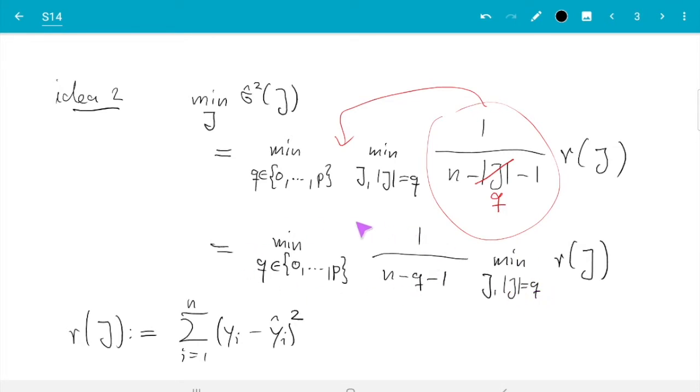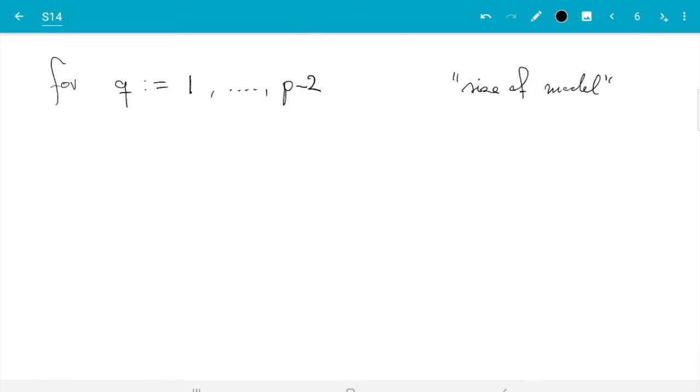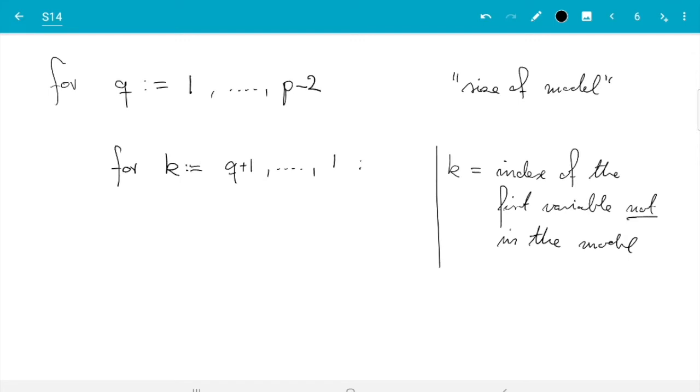And then the next loop is more of a trick. So for k ranging from q plus 1 up to 1. This loop is just part of the algorithm. That k is not part of the problem. And what that does is k is the index of the first variable not in the model. The not is important. And it turns out slicing it like this makes it all a bit easier. And I don't want to write the full steps here, but I want to just explain that idea. And I think after you got that, then the rest should be easy to read.